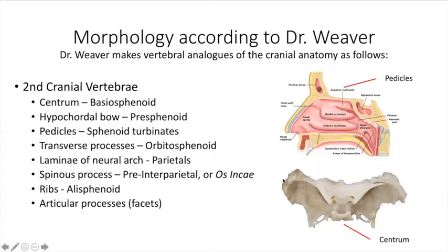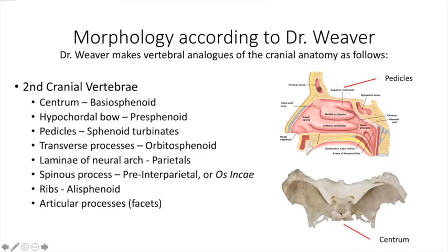The second cranial vertebra, going up from what would have been the notochord, is the centrum, hypochordial bow, pedicles, transverse process, and so forth. She's going to superimpose all these onto the sphenoid bone, such that this would be the centrum or body. Here you can see the pedicles — here are the sphenoid turbinates. I'm not asking you to accept this, by the way; I'm just asking you to understand how it is that she looked at things.